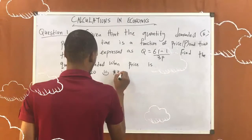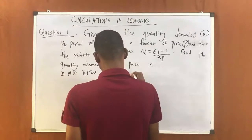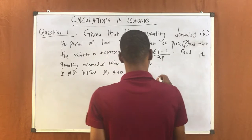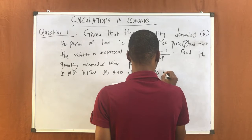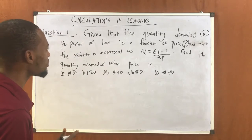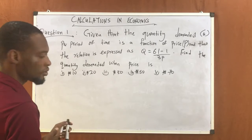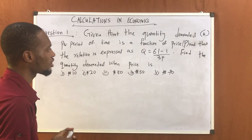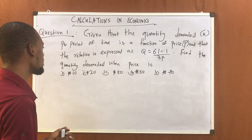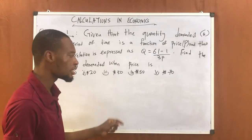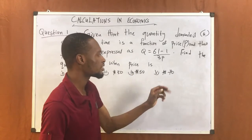Question 1. Given that the quantity demanded Q per period of time is a function of price P, and that the relation is expressed as Q equals 61 minus 1, all over 3P. Find the quantity demanded when price P is: 1) 10 Naira, 2) 20 Naira, 3) 13 Naira, 4) 15 Naira, 5) 17 Naira.